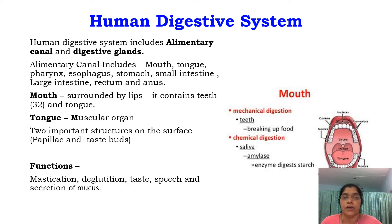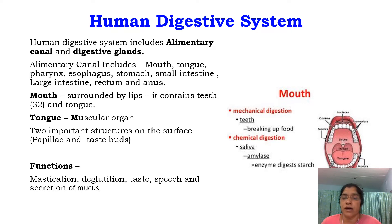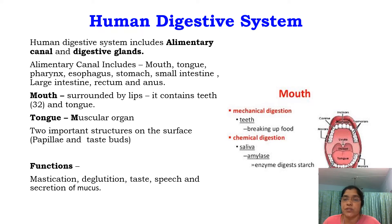The mouth is surrounded by lips and contains 32 teeth and a tongue. The tongue is a muscular organ. Two important structures on the surface of the tongue are papillae and taste buds. The functions of the mouth are mastication, taste, speech and secretion of mucus.